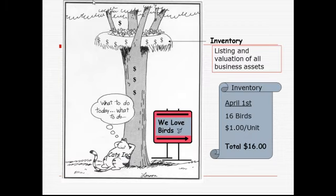A cartoon I like to show: in this cat's inventory, he has birds in a tree with a date of April 1st. He has 16 birds in that nest and values each at about a dollar a bird. His total inventory value is $16. That's another look at how inventory works — it's what you have available that has value.